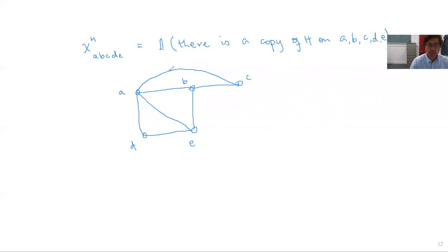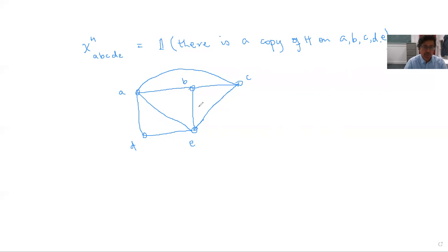There are different permutations of these vertices which might give rise to different copies. For instance, you can get one copy of H by ignoring one diagonal, and another copy by a different arrangement. So there may be more than one copy present on the same set of vertices. Whether we count ordered or unordered subsets, we need to make sure we're not double counting — but let's just define the random variable this way.